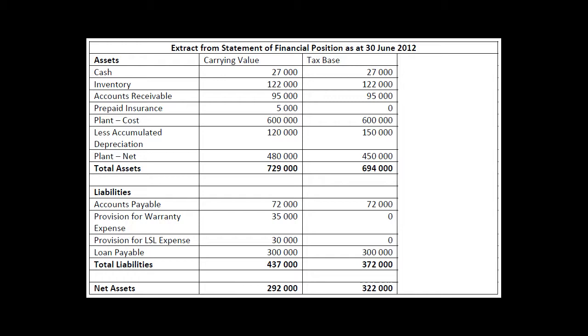For plant, we've already talked about property, plant and equipment. Plant at cost was $600,000 — that's the same for both. Accumulated depreciation for accounting was $120,000; accumulated depreciation for tax was $150,000. So plant carrying value for accounting is $480,000, and plant carrying value for tax is $450,000. We'll look at the temporary differences in a second.